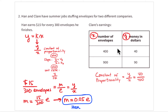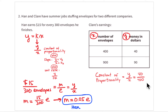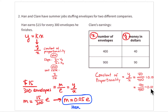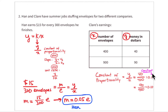To find the constant of proportionality, divide y by x: $40 ÷ 400 = 0.10, and $90 ÷ 900 = 0.10 as well. Every case gives one-tenth, or one dime — 10 cents. That's why it's called the constant of proportionality — it's constant.